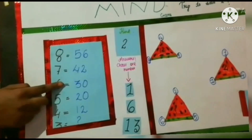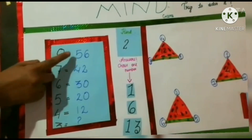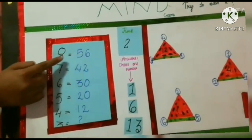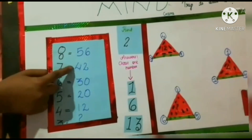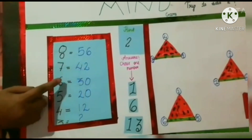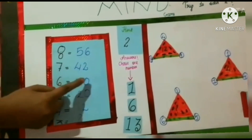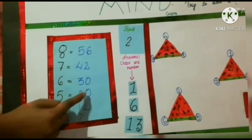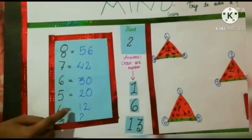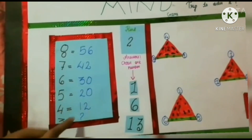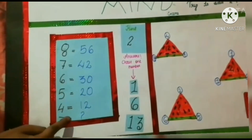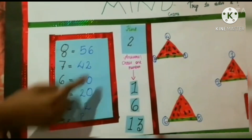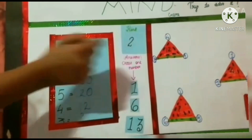So this is the first puzzle. 8 is equal to 56. 7 is equal to 42. 6 is equal to 30. 5 is equal to 20. 4 is equal to 12. And 3 is equal to what? The answer is 2.